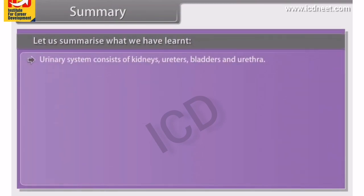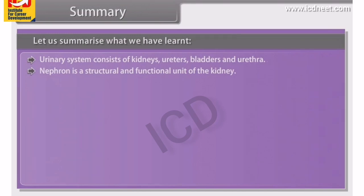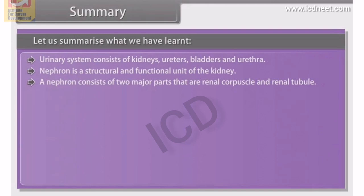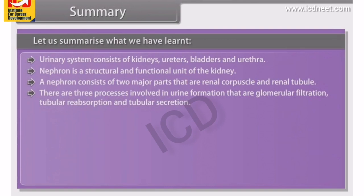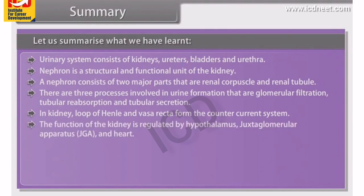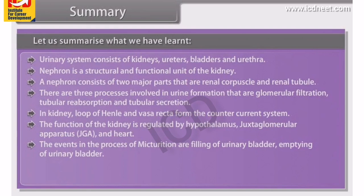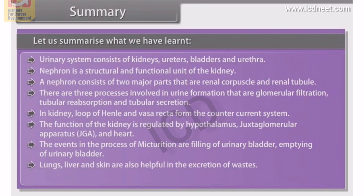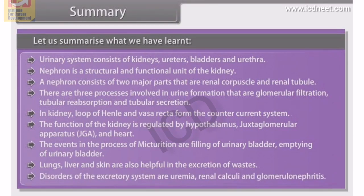In summary: the urinary system consists of kidneys, ureters, bladder and urethra. The nephron is the structural and functional unit of the kidney, consisting of the renal corpuscle and renal tubule. The three processes of urine formation are glomerular filtration, tubular reabsorption and tubular secretion. In the kidney, the loop of Henle and Vasa recta form the counter-current system. Kidney function is regulated by the hypothalamus, juxtaglomerular apparatus and heart. The events of micturition are filling and emptying of the urinary bladder. Lungs, liver and skin also help in excretion. Disorders of the excretory system include uremia, renal calculi and glomerulonephritis.